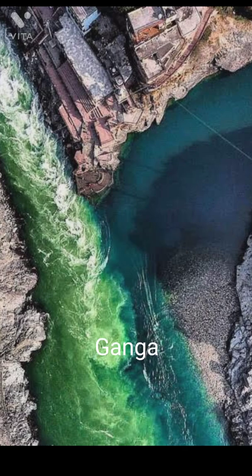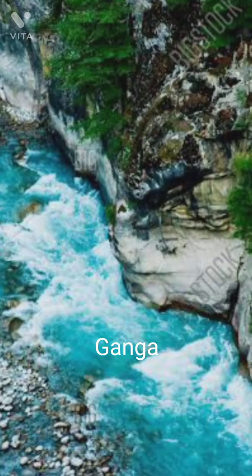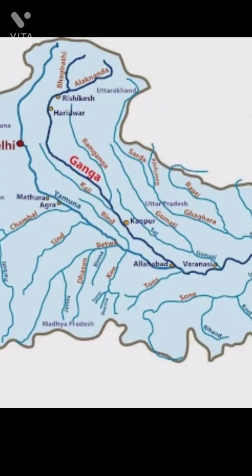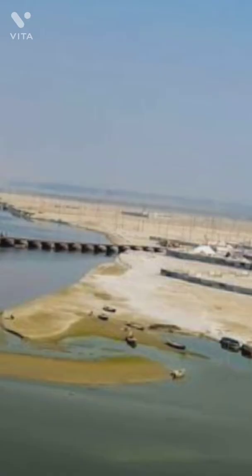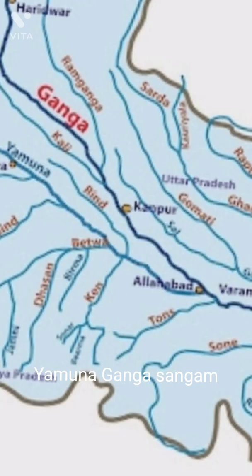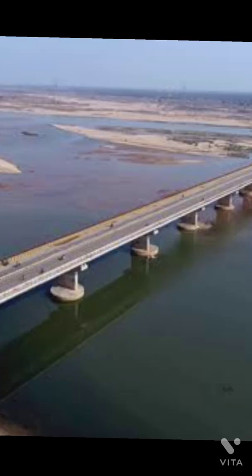Ganga flows into the plains of North India, joined by many rivers from the right bank and the left bank. The right bank rivers are Yamuna, Son, Damas, Falgun, and Punpun.